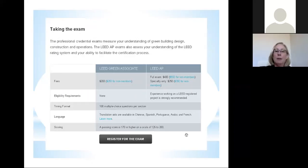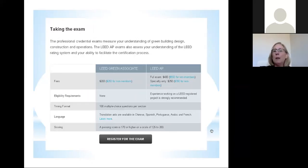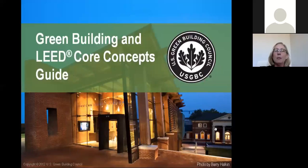A passing score is 170 on the scale of 125 to 200. This information is right off the U.S. Green Building Council website and their fee structure. This also changes. Right now there is a promotion for students, and the fee is only $100 for full-time students who want to take the LEED green associate.